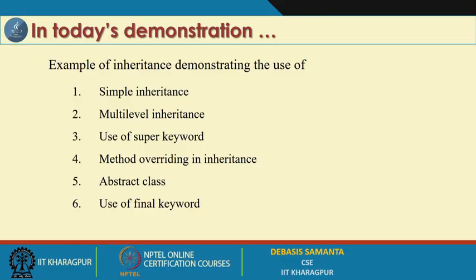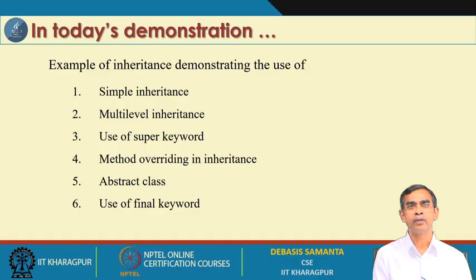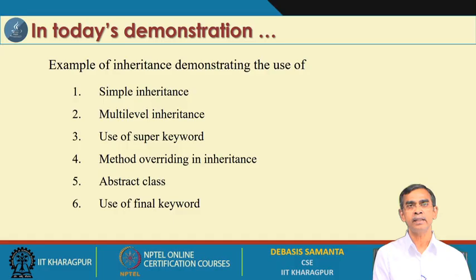We have discussed the super keyword, which is used to avoid namespace collision — the use of the super keyword to invoke the superclass constructor, and using the super keyword to reference a variable of the superclass. Method overriding is an important concept in inheritance. There are two more keywords, namely abstract and final, that come into play with inheritance. These are the topics we are going to discuss in this demonstration lecture.